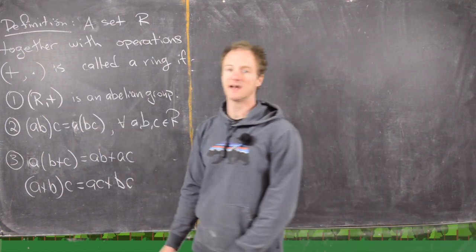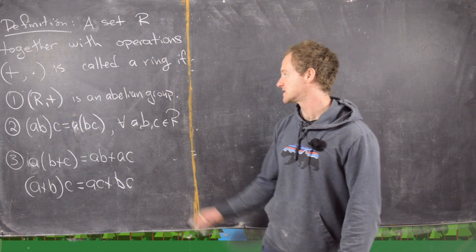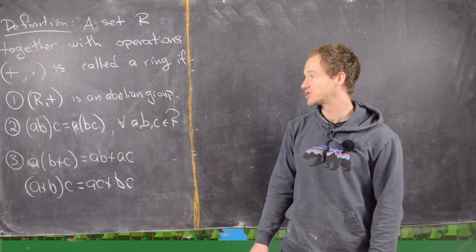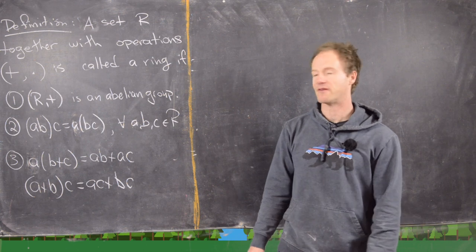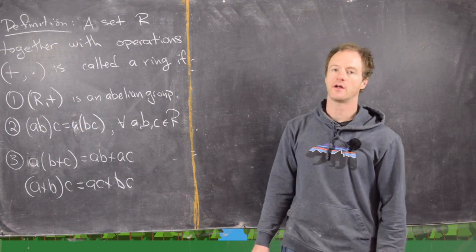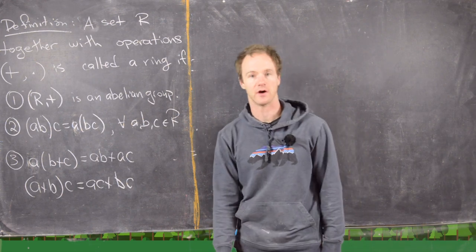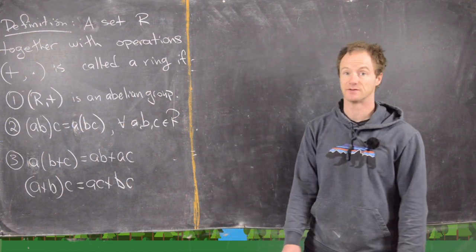R with plus is an abelian group, and so what that tells us is that it's commutative with this one operation addition, we have an identity and we have inverses. We generally call the identity in this case zero. The additive identity is called zero.